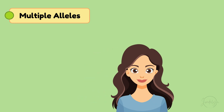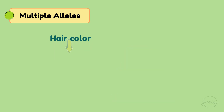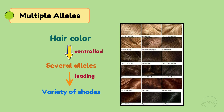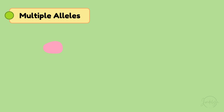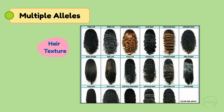In addition, there are other traits influenced by multiple alleles. For instance, hair color is controlled by several alleles, leading to a variety of shades — from blonde to brown to black, and even red. The texture of hair, whether it's straight, wavy, or curly, can also be influenced by multiple alleles interacting.